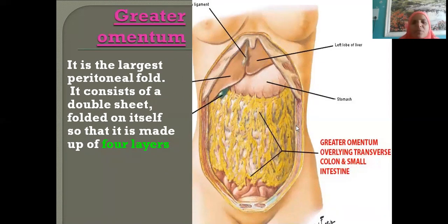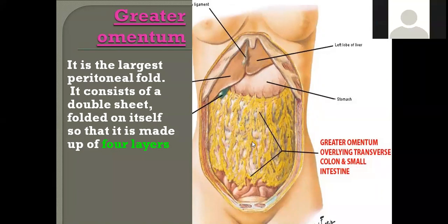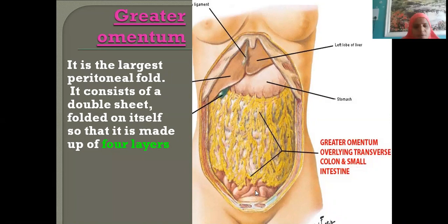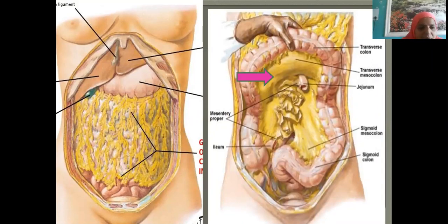You need to pull the stomach in order to see the lesser omentum. The big apron-like structure you see is the greater omentum. You are able to see only a small part of the small intestines because the greater omentum is intact in front.